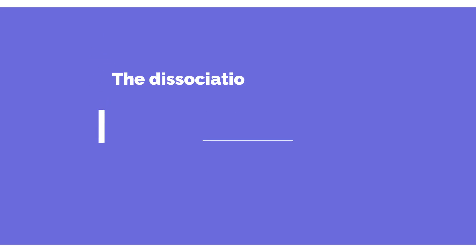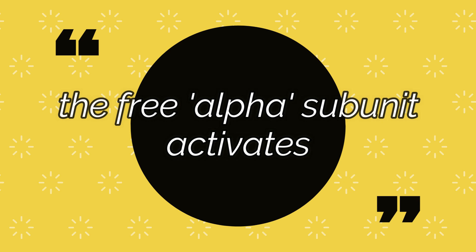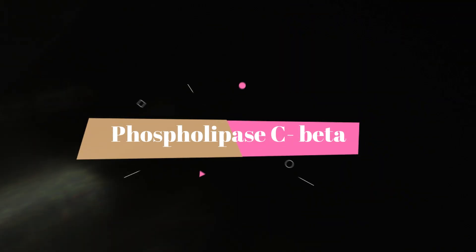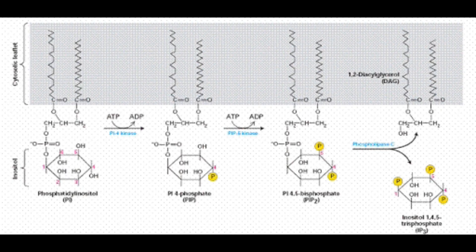When the dissociation of the alpha subunit from the beta and gamma complex takes place, the free alpha subunit can actually activate something called phospholipase C beta. This helps act on phosphoinositol-4-phosphate or PIP, and phosphatidylinositol-4,5-bisphosphate or PIP2.